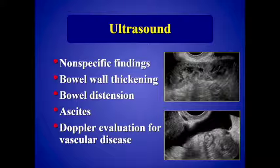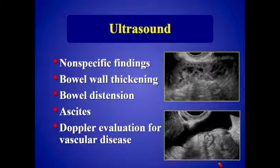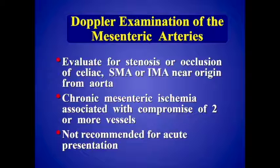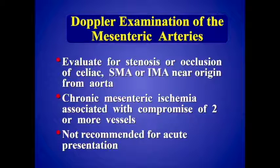For the ultrasound examination, the grayscale findings are typically nonspecific — we'll see some bowel wall thickening and distension, and there may be some ascites. We perform the Doppler evaluation to look for patency of the abdominal vessels. For the mesenteric arteries, we look for vascular compromise in the celiac, superior mesenteric, and inferior mesenteric near the origin from the abdominal aorta and into the proximal segments. For the diagnosis of chronic mesenteric ischemia, we typically need to see stenosis or occlusion of at least two of those three vessels. Ultrasound is not really recommended for an acute presentation — those patients should go for CT angiography.